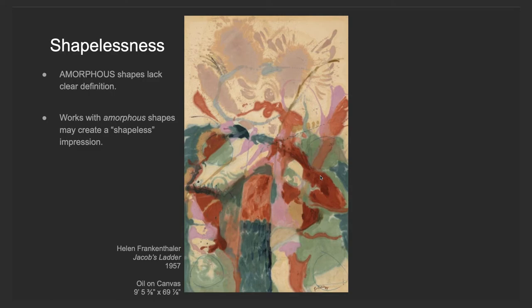Shapelessness. Amorphous shapes lack clear definition. Works with amorphous shapes may create a shapeless impression. Another painting by the artist Helen Frankenthaler — I refer to this painting as having amorphous shapes because I don't really recognize any logic to the shapes. There are no straight edges, so it's not geometric. And it's not representational of any object in real life. To be abstract, it should be representational of the real world in some way. I think this artwork is of and about shapeless, amorphous objects.